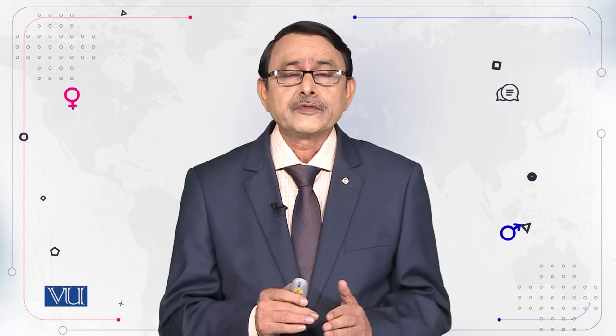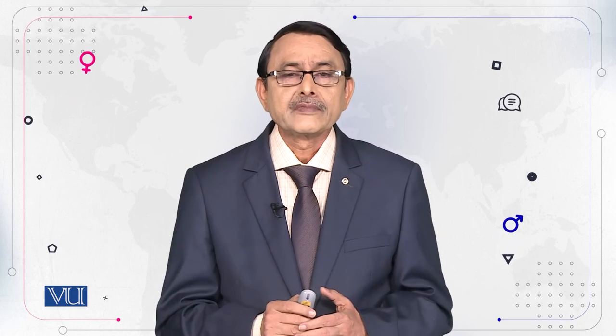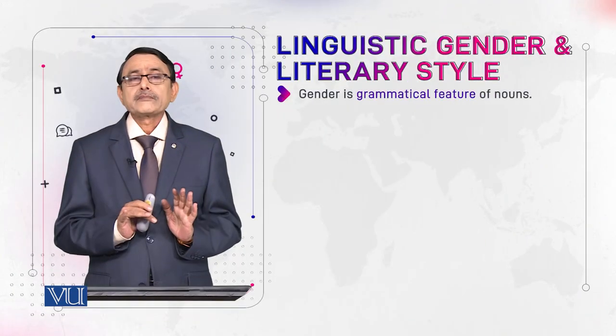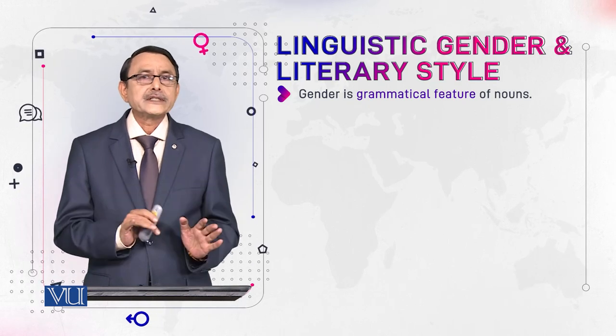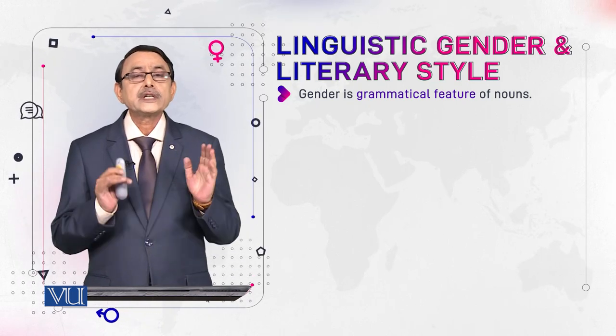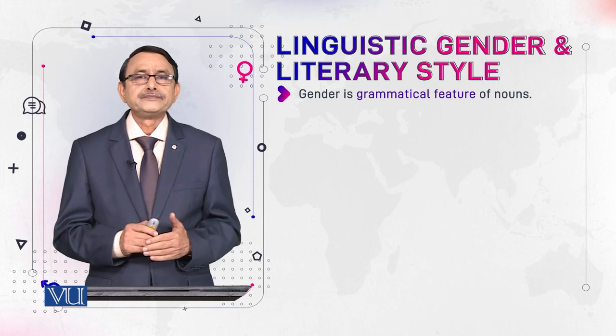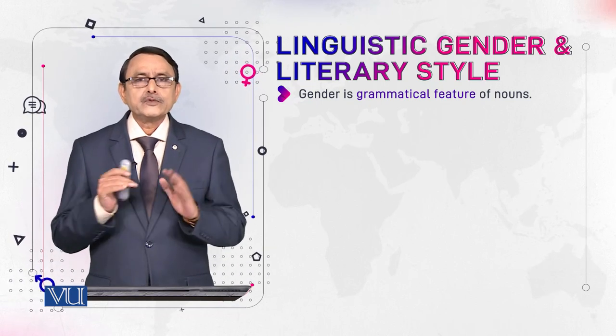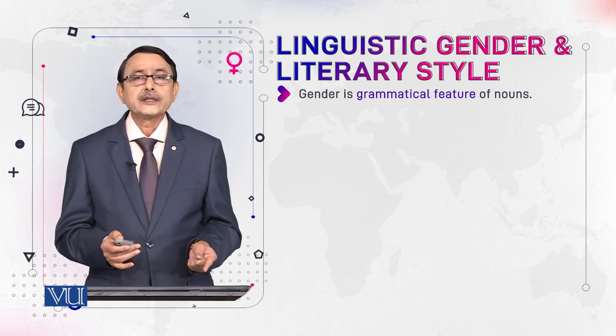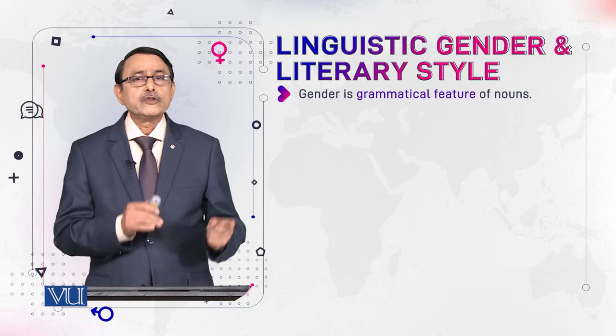Now here we would talk about the second area where we can see the relationship between gender and literature, and this is through the gender category — the grammatical gender that is available in a language. So here we are not talking about biological gender, male or female. We are not talking about cultural gender — how the society and culture defines a man and a woman. We are talking about gender as a category of grammar.